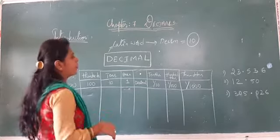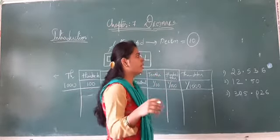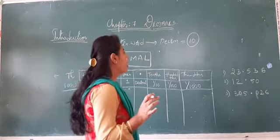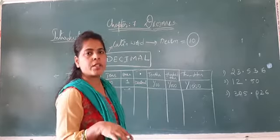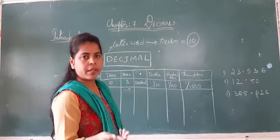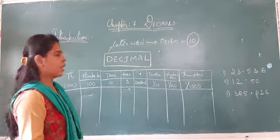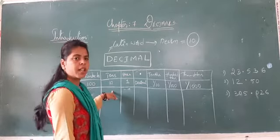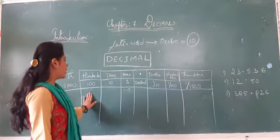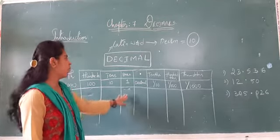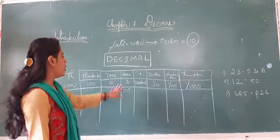Just as we have the Indian system and international system, here also we will have decimal numbers placed into place values. For a regular number like 23, the digit 2 is in the tens place and 3 is in the ones place. For 325, the 3 is in the hundreds place, 2 in the tens, and 5 in the ones. You already know how to write numbers in the Indian system with place values.